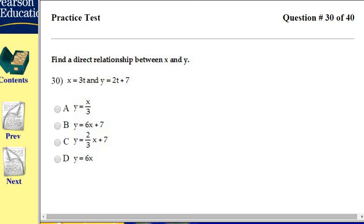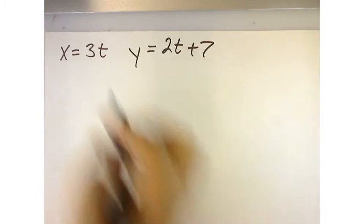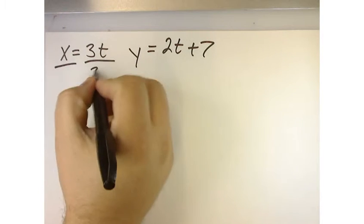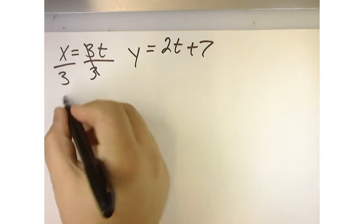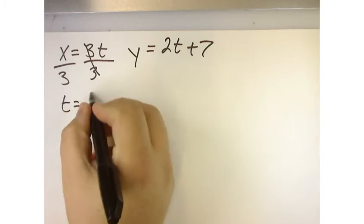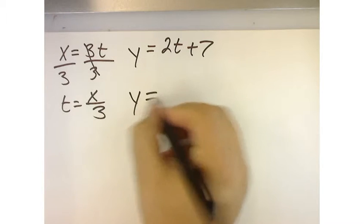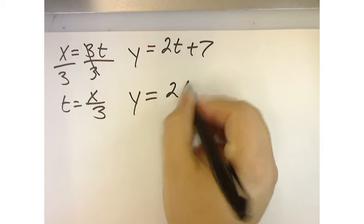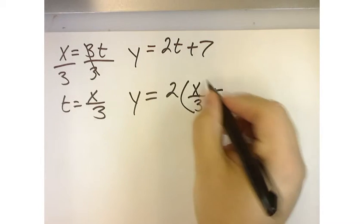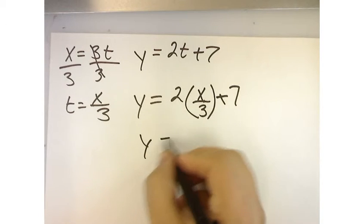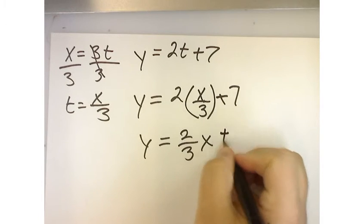To solve that, I'm just going to take this and solve for t, and I get t is equal to x over 3. So y is equal to 2 times x over 3 plus 7. So y is equal to 2 thirds x plus 7.